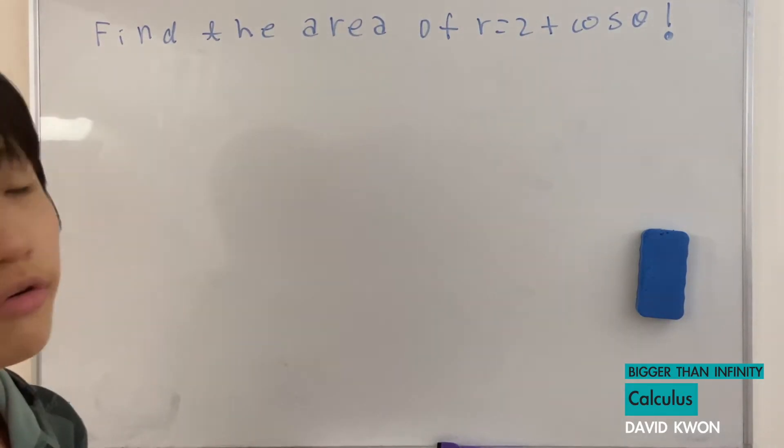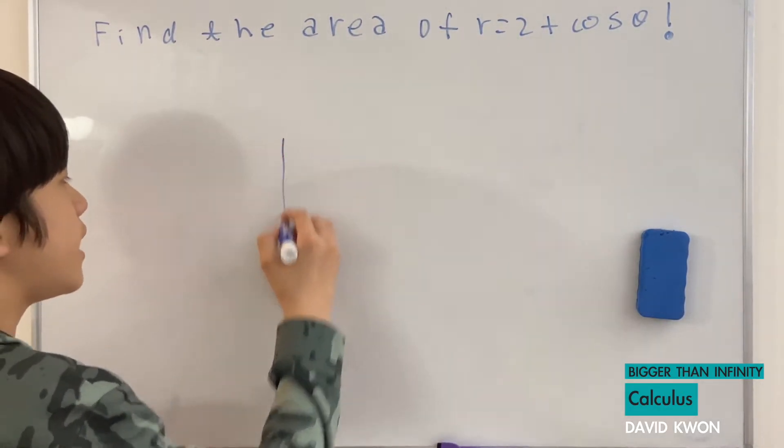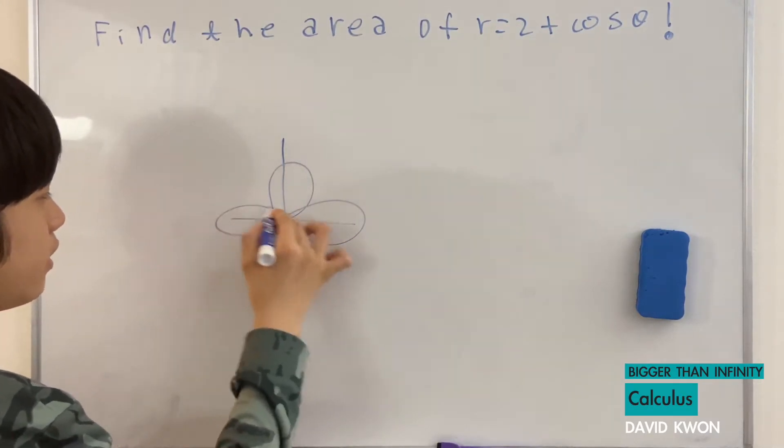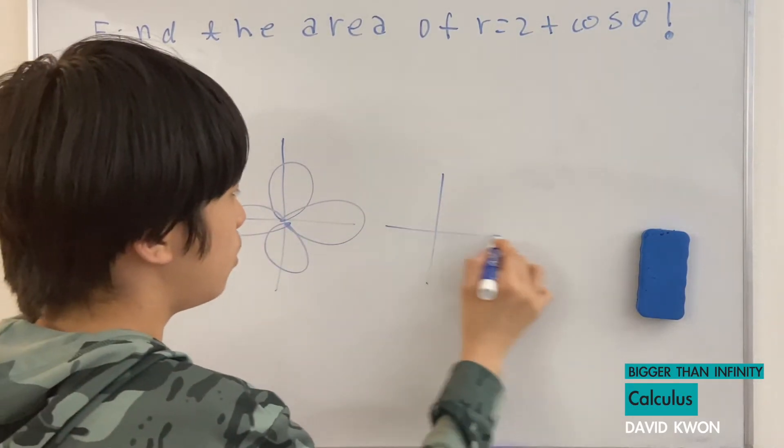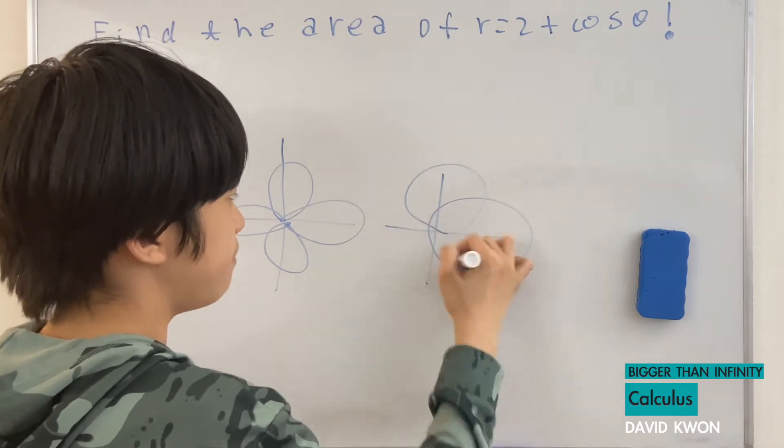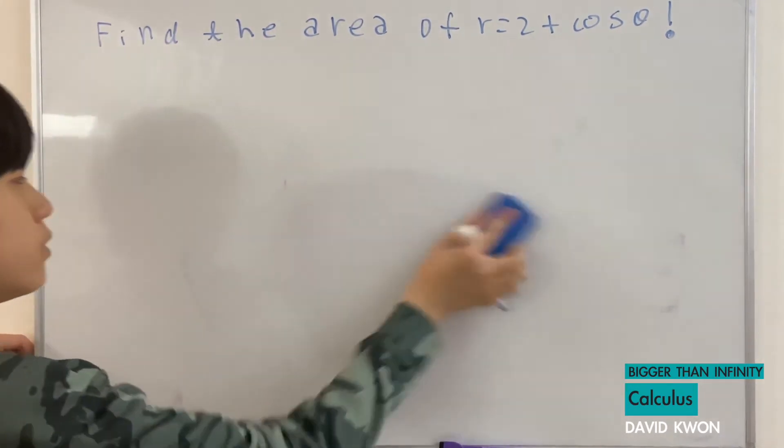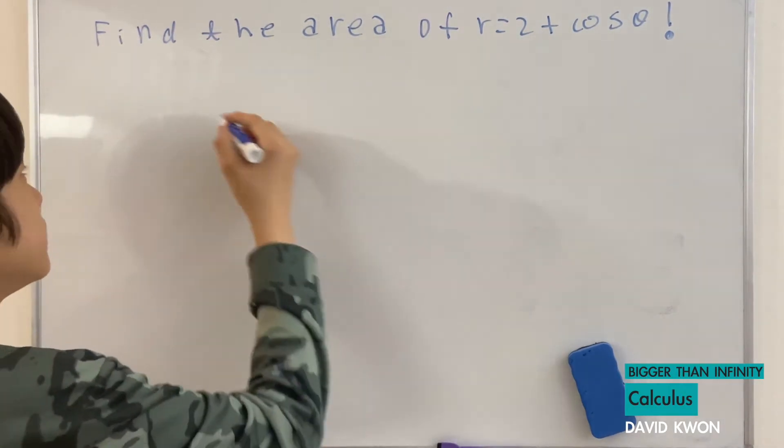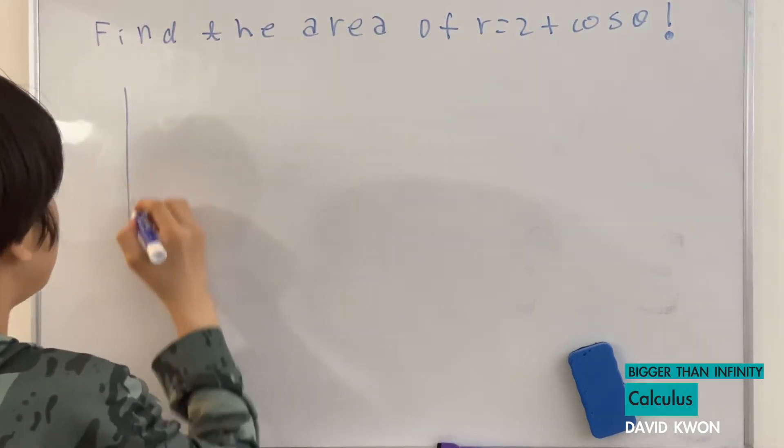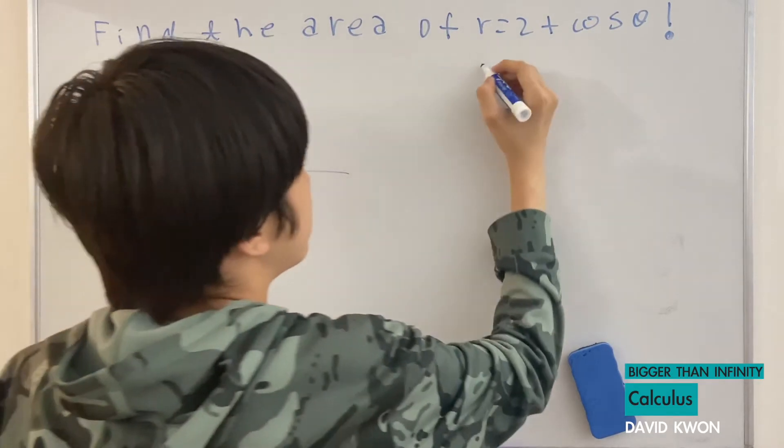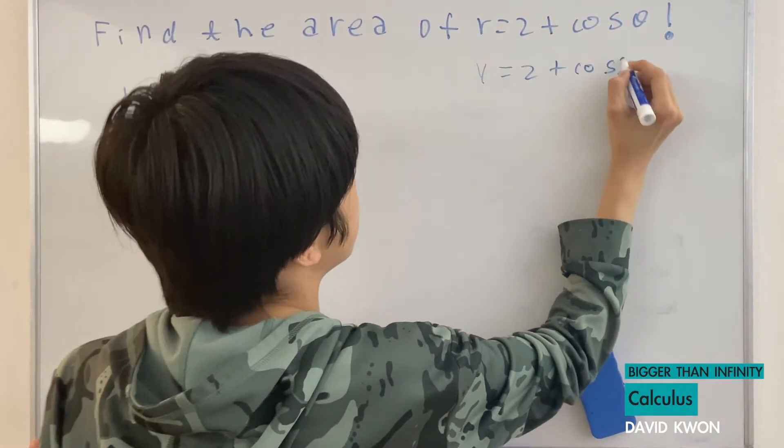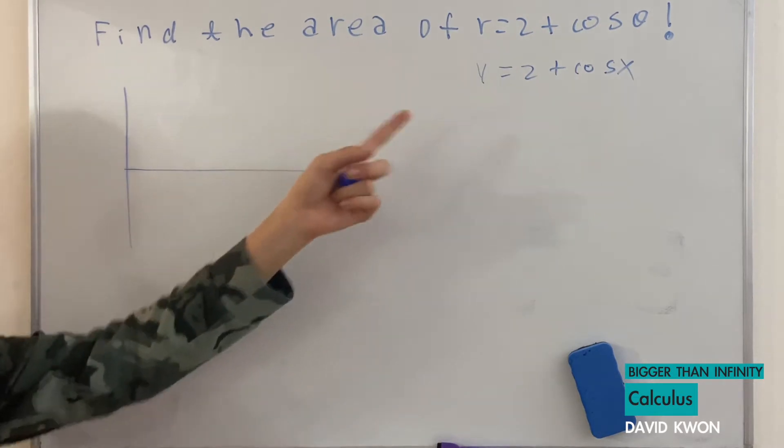But the thing about polar equation graphs, they always end up like circles in different places that always connect. So to solve the area of this, let's graph it. To graph this first, I like to actually graph this where it is in terms of y equals 2 plus cosine x.